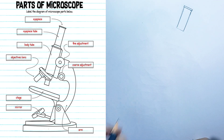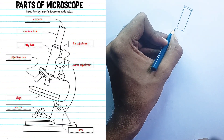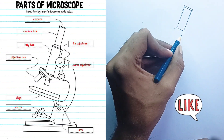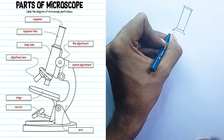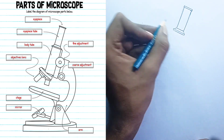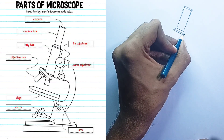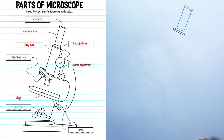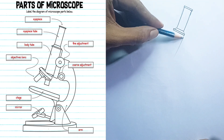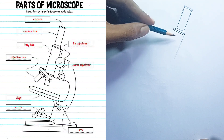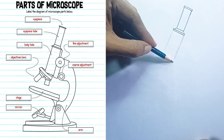Eyepiece tube: this is the cylindrical tube that holds the eyepiece in place at the top of the microscope. It's often a fixed component, but in some models it might be adjustable for different interpupillary distances. Body tube: this is the main tube that connects the eyepiece to the objective lenses, serving as a light path and ensuring light travels from the objective lenses to the eyepiece without interference.